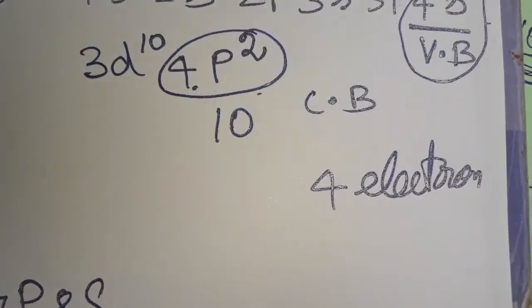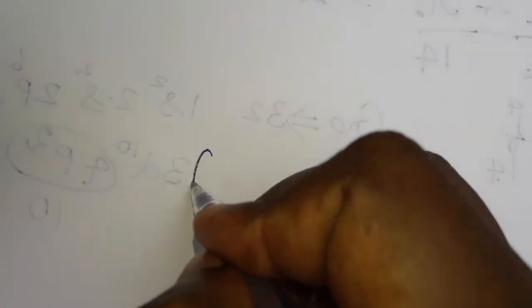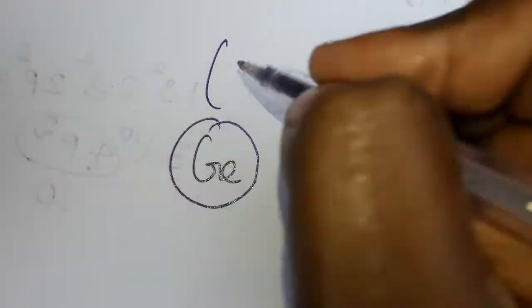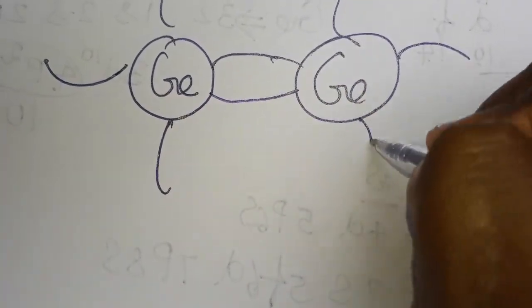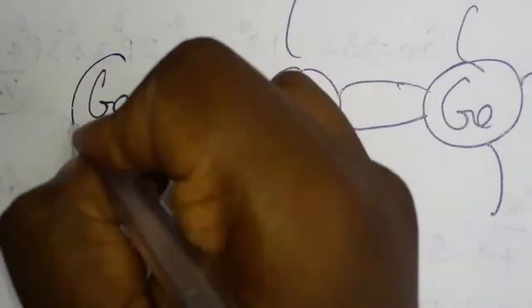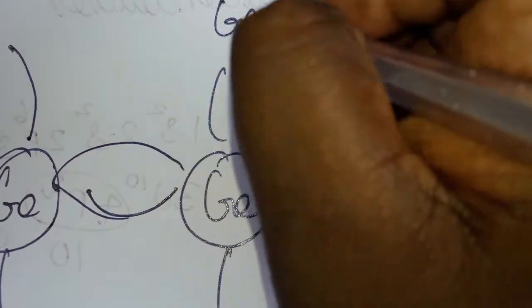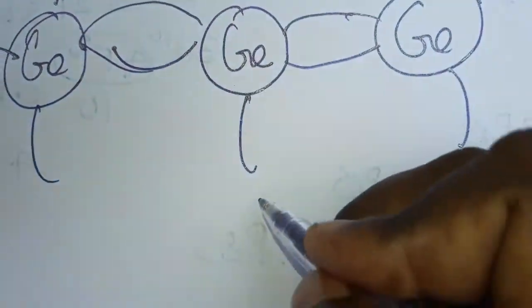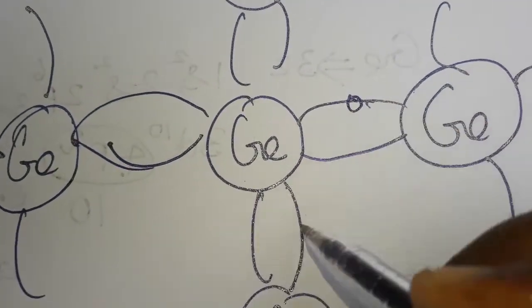So totally 4 electrons are in the outer state — 2 in the valence band and 2 in the conduction band. Only germanium and silicon have this combination. Looking at the diagram: a germanium atom has 4 outermost electrons. Surrounding it, each neighboring germanium atom also has 4 electrons on each side.